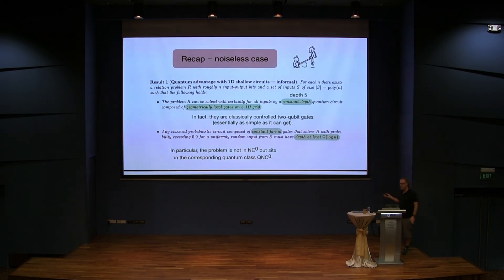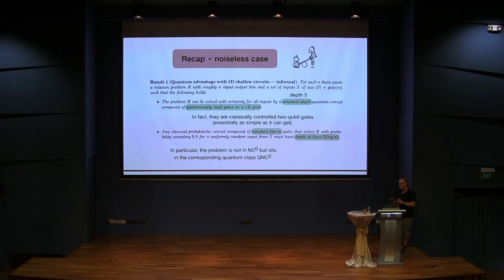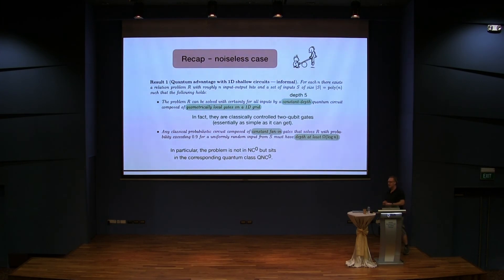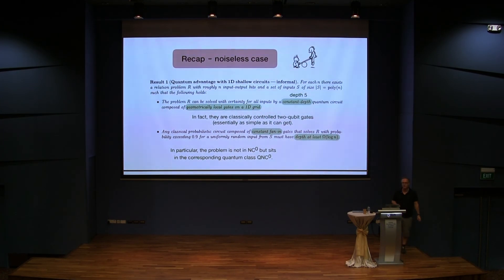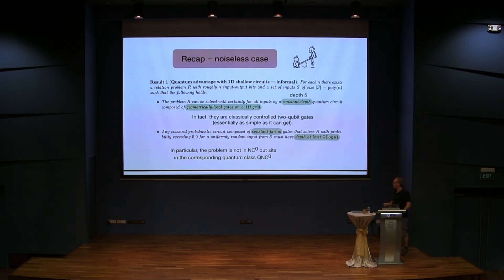One problem is that we had to go into such small classes that the gap doesn't seem to be really strong enough — it's between constant and logarithmic depth. For logarithmic depth to really become a problem for a classical computer, we would need to choose N to be really large. It's much better to have a separation between polynomial and exponential time, as they have for the Google experiment. The other issue is that this was only the noiseless case — we assumed the quantum computer does not have any noise.